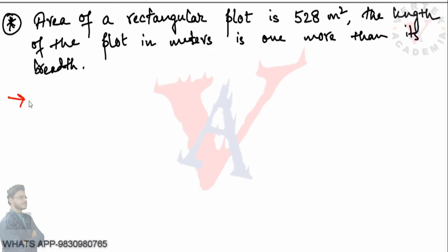The first problem: the area of a rectangular plot is 528 square meters. The length of the plot in meters is one more than its breadth. After reading the problem, we can see that the area, length, and breadth are given, so there must be some equation to be framed using length, breadth, and area. The first thing that comes to mind is length into breadth equals area, and from that we have to frame the equation. The condition statement is very important in such problems.